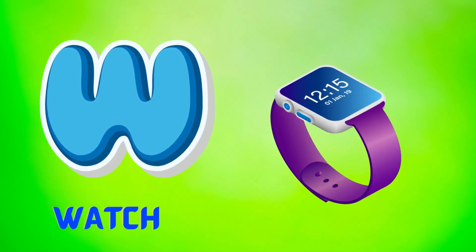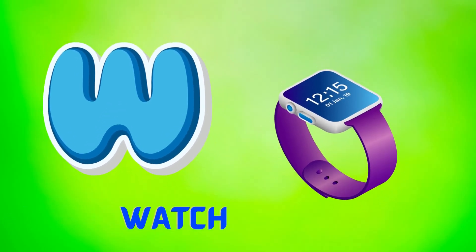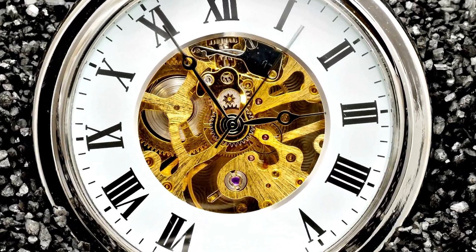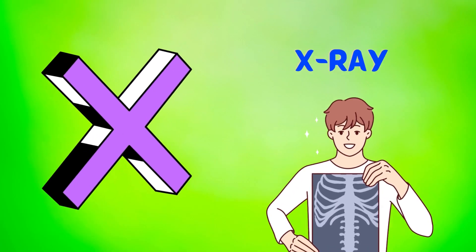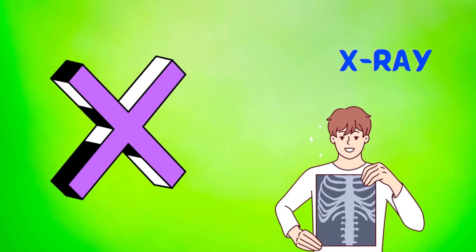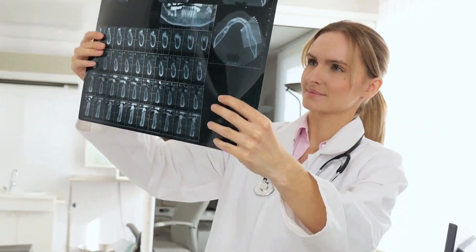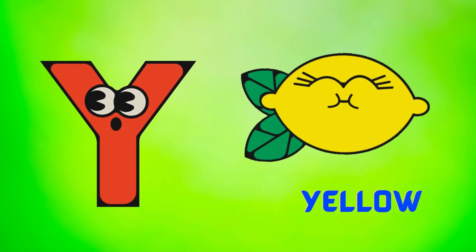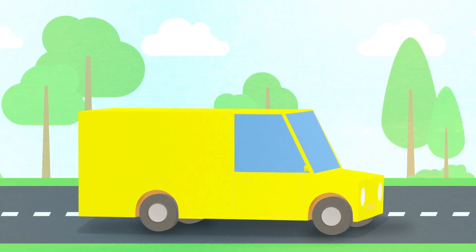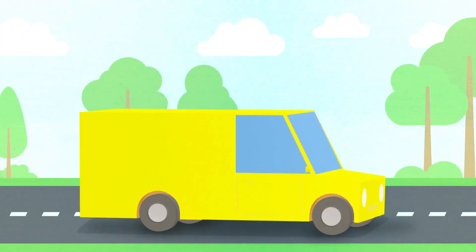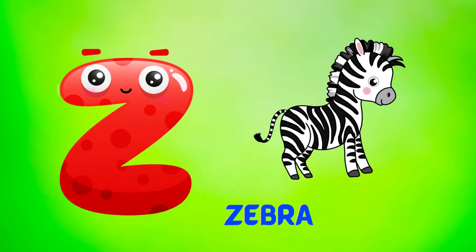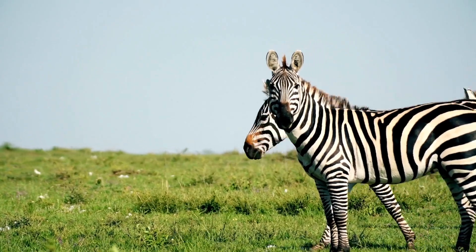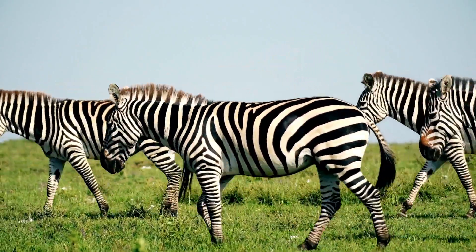W is for watch. Watch, watch, watch. X is for X-ray. X-ray, X-ray, X-ray. Y is for yellow. Yellow, yellow, yellow. Z is for zebra. Zebra, zebra, zebra.